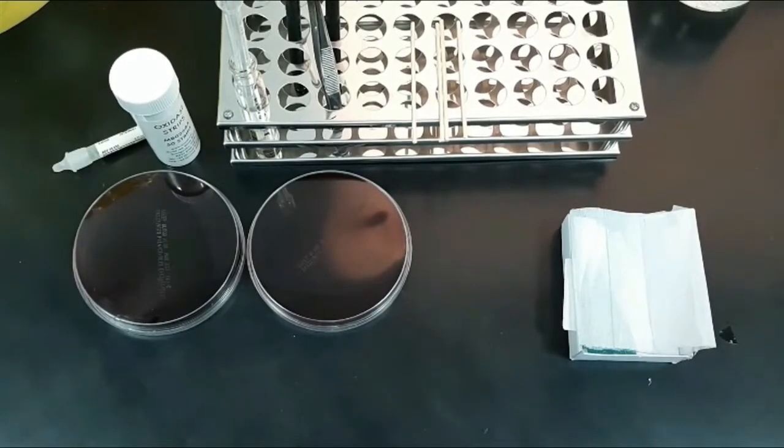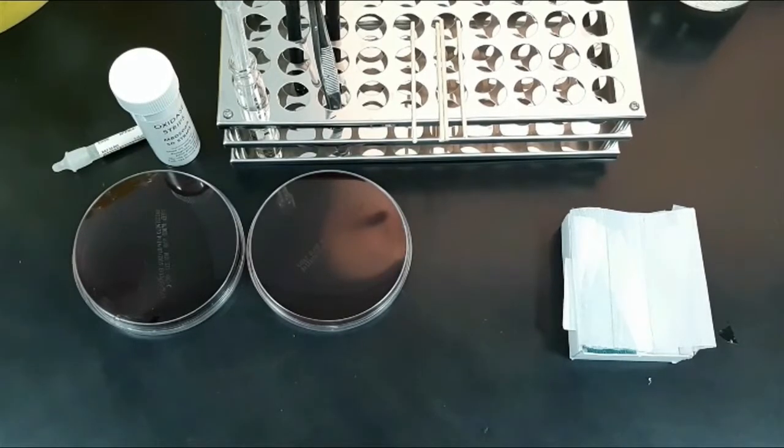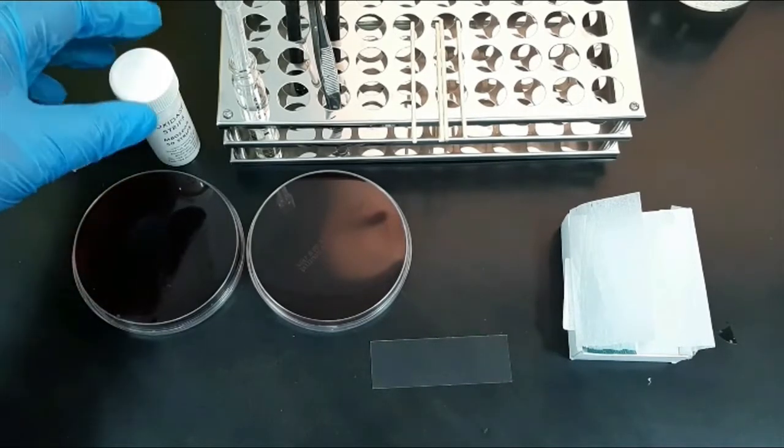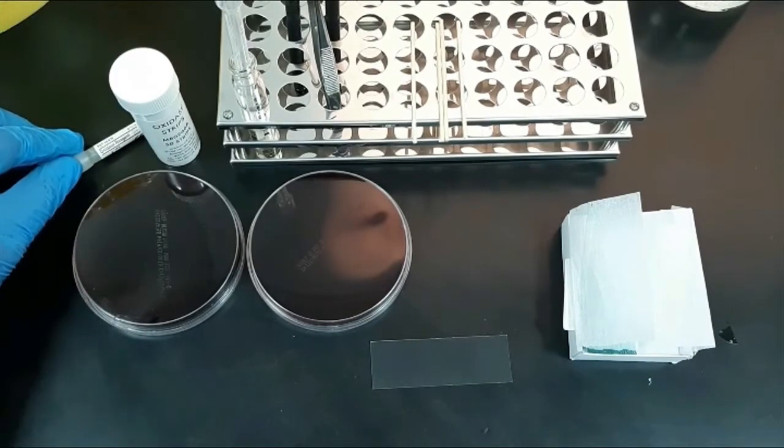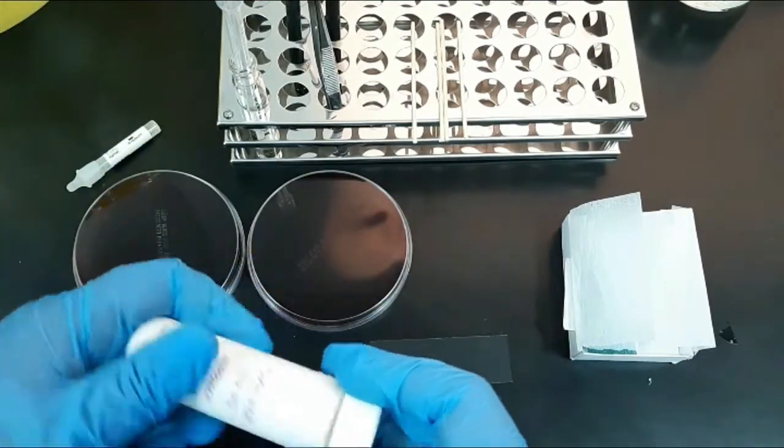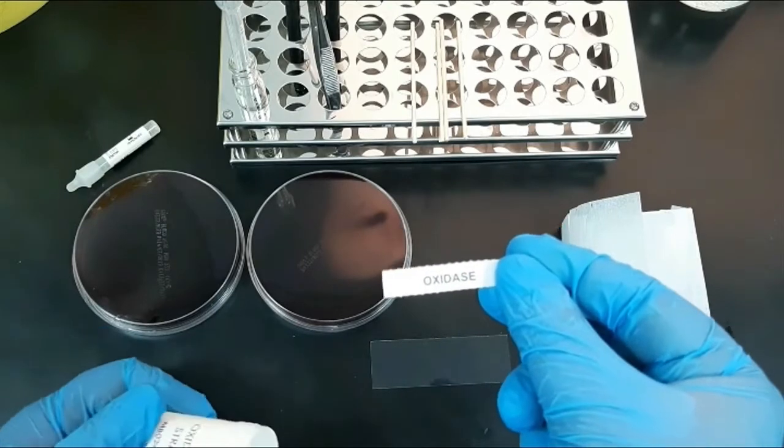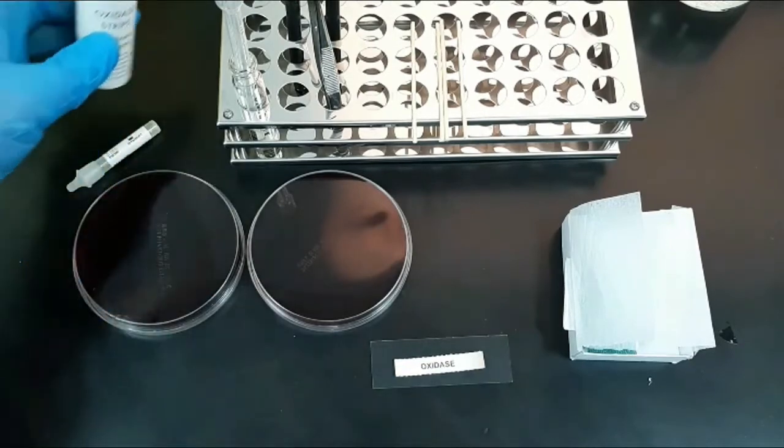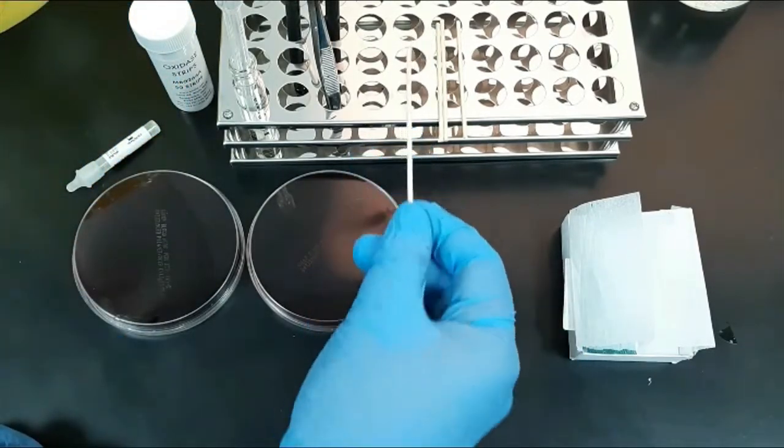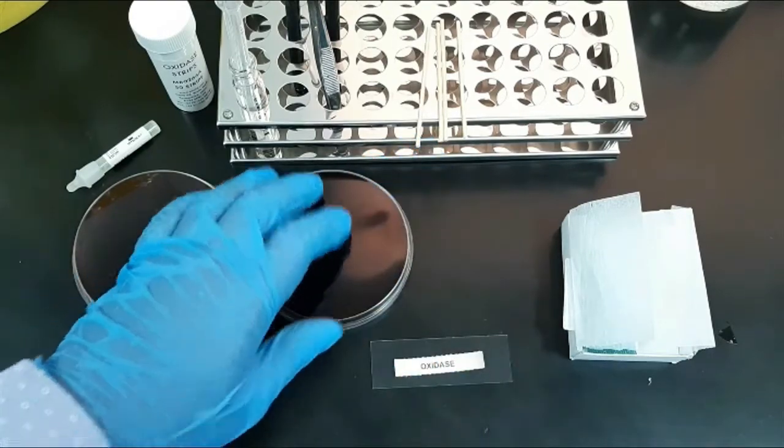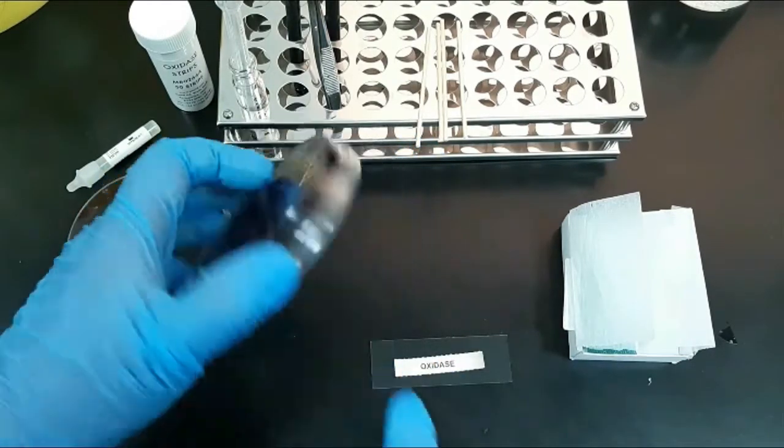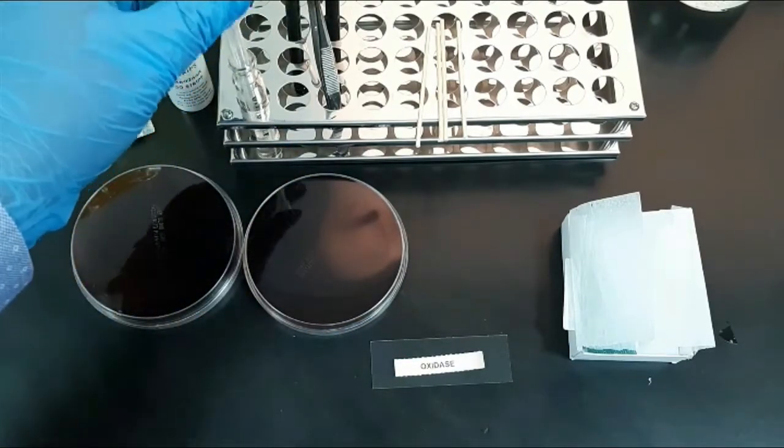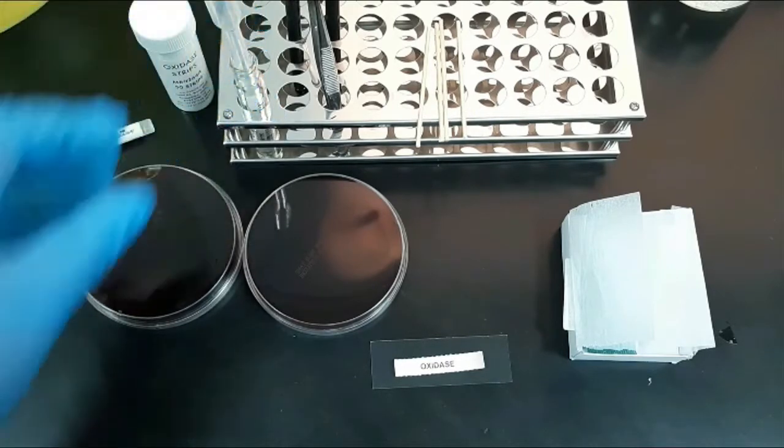For the oxidase test, first we'll see the requirements needed: a glass slide, oxidase paper strips or oxidase reagent. These oxidase strips are impregnated with oxidase reagent, tetramethyl-p-phenylenediamine dihydrochloride. We also need a wooden stick or disposable loop, bacterial culture plates—one is oxidase-positive bacteria Pseudomonas and another is E. coli which is oxidase-negative—and distilled water.